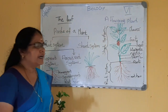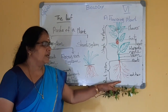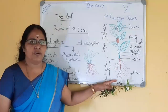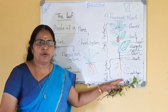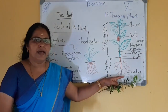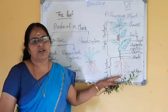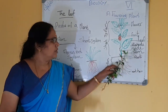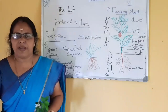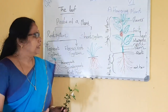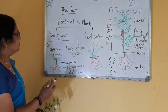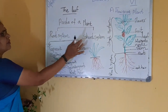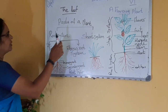The ultimate part of the root is the root hair. These root hair absorb water from the soil. So, that is the underground part of the plant — the root system and shoot system.